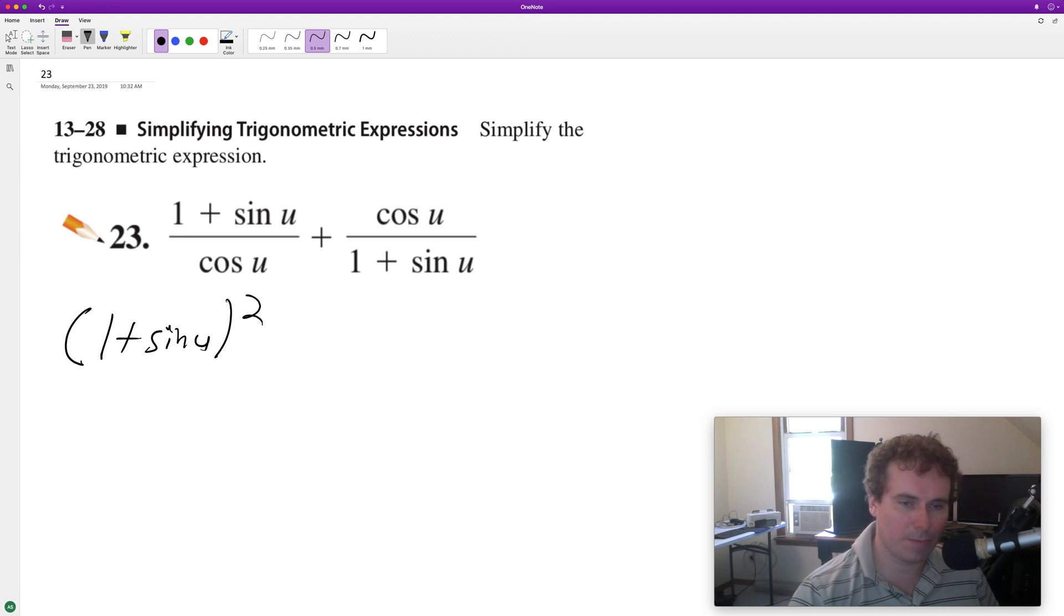squared on top, plus cosine of u times cosine of u, so that we get cosine of u times 1 plus sine of u